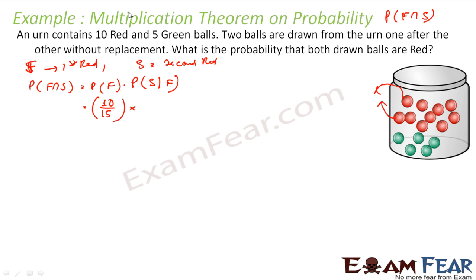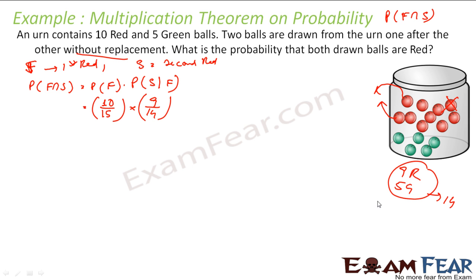Since it was without replacement, given the first ball is red, we are left with only 9 red balls and 5 green balls — 14 balls total. So probability of getting second red given first is red = 9/14. Multiplying: P(F∩S) = (10/15) × (9/14) = 3/7. That is the answer, a simple application of the multiplication theorem.